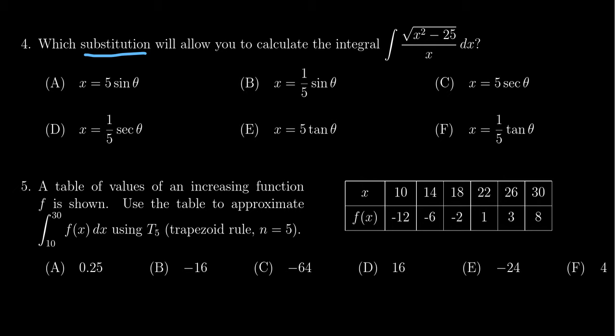U-substitutions, trigonometric substitutions, and rationalizing substitutions. Because of the square root of x² - 25 on top, this indicates we should use a trigonometric substitution.